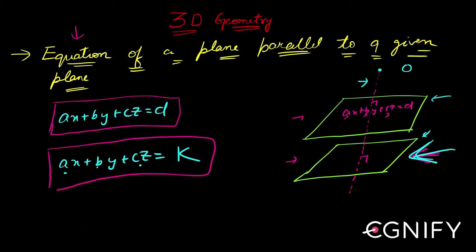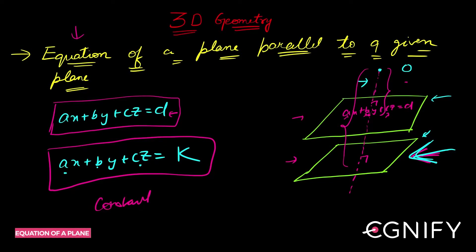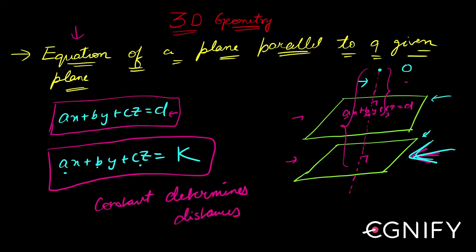The two planes will differ only by a constant, because they are at different distances from the origin. This constant determines the distance — one plane is at some distance and the other is at a different distance from the origin. So ax + by + cz will be the same for both; only the constant differs.